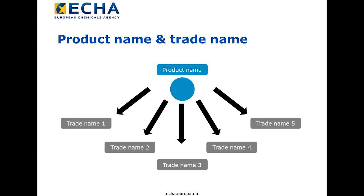The product name equals the unique formulation name. The trade name equals the marketing name. A single product or formulation can be marketed with a number of trade names. Reversely, many trade names might refer to a single product or formulation. A single SPC based on a single product can contain numerous trade names. Alternatively, a number of SPCs based on the same formulation and therefore linked to the same product name can contain different trade names. The same is true for product families.